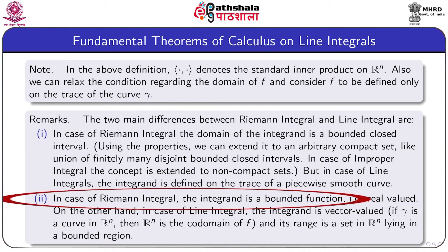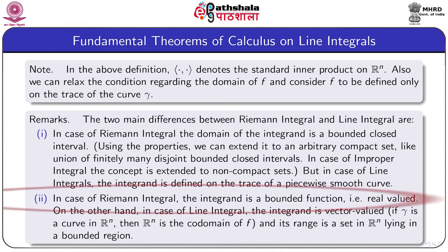The second point: in the case of Riemann integral, the integrand is a bounded function, that is, it must be real valued. On the other hand, in the case of line integral, the integrand is vector valued. If gamma is a curve in R^n, then R^n is the codomain of F, and its range is a set in R^n lying in a bounded region.